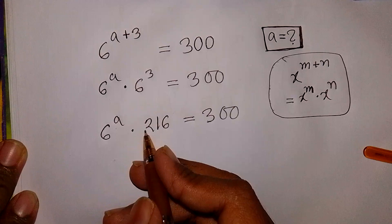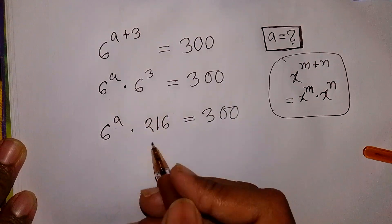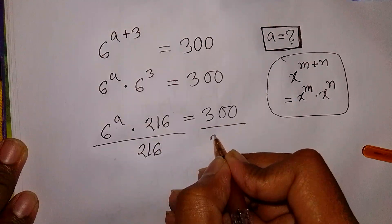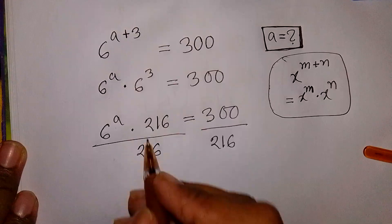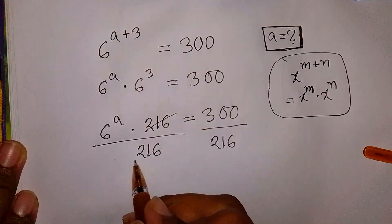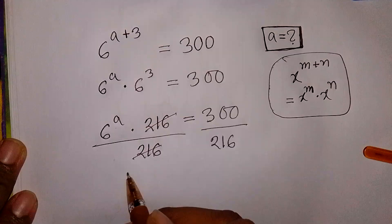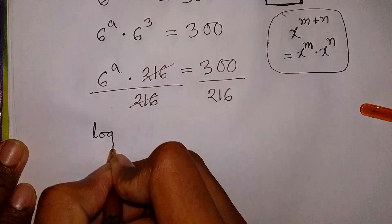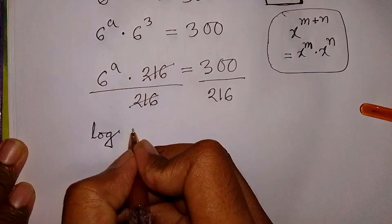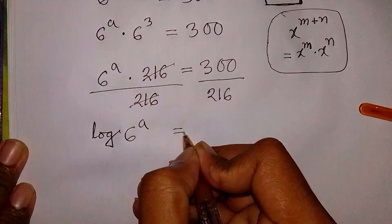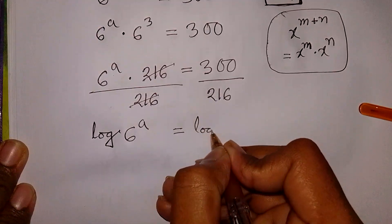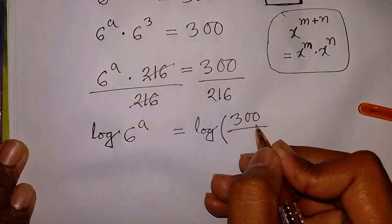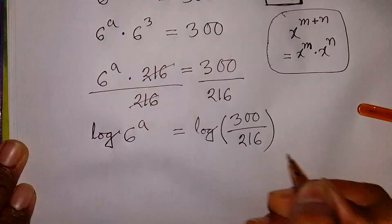At this moment, we divide by 216 on both sides. This 216 will be cancelled out. And now we apply log to both sides: log of 6 to the power A is equal to log of 300 over 216.